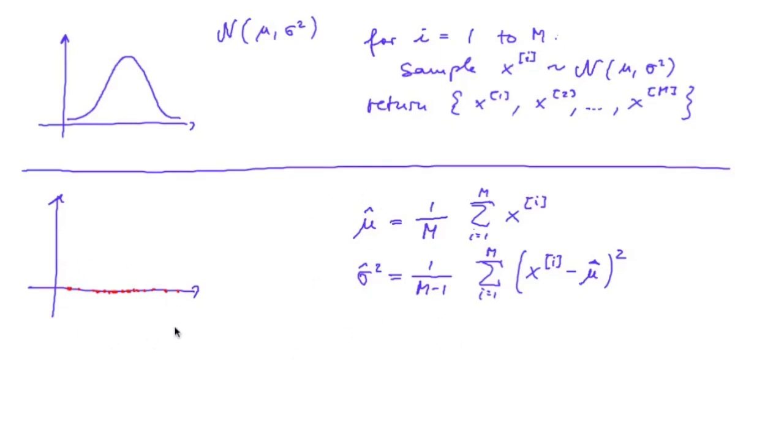However, if the particles do not represent a normal distribution, then we still get this first and second moment. But the distribution represented by our particles will be different from the normal distribution that is defined by our estimated mean and variance.